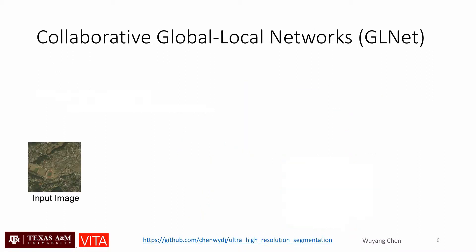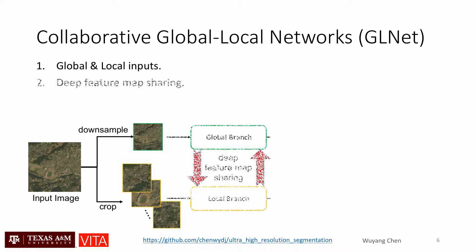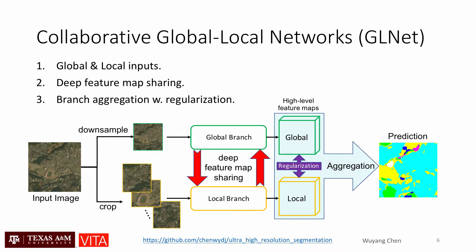We propose our Collaborative Global Local Networks, GLNet. GLNet is composed of a global and a local branch, taking both the downsampled image and cropped local patches as inputs. It deeply fuses feature maps from two branches, effectively preserving both global and local information in a highly memory-efficient manner. An aggregation and regularization module is utilized to generate the final dense prediction from two branches.